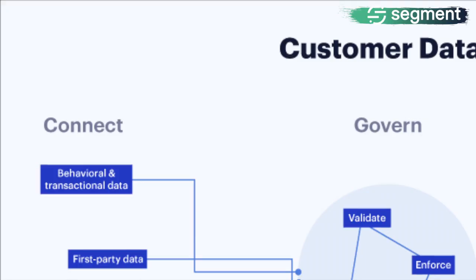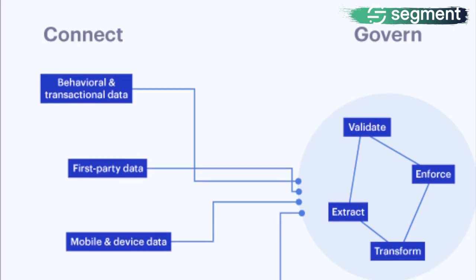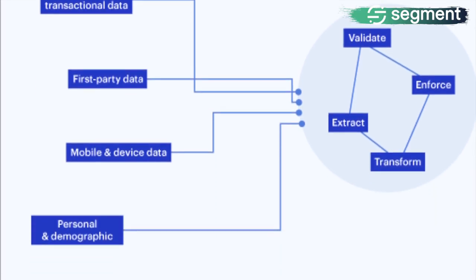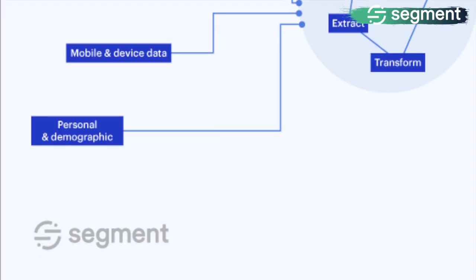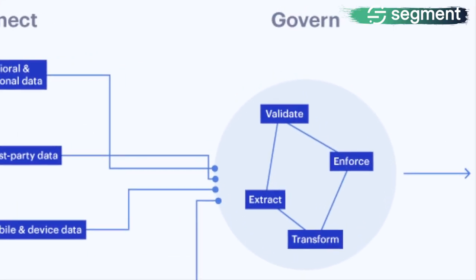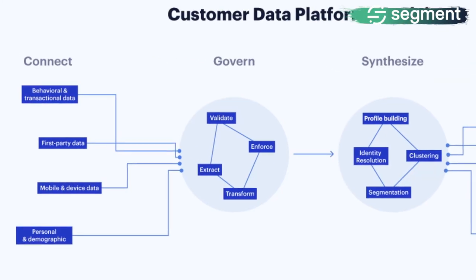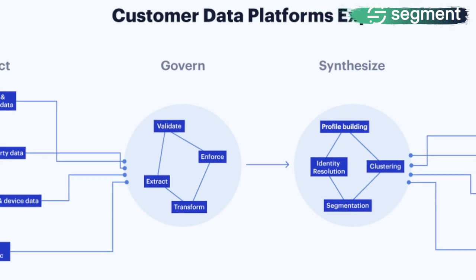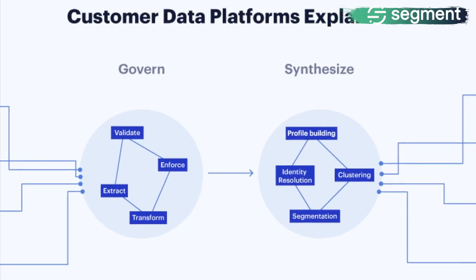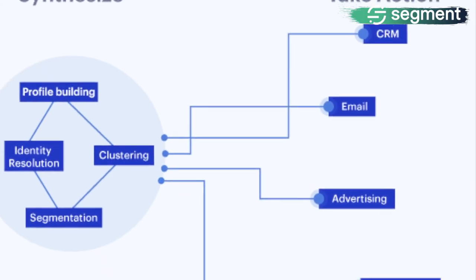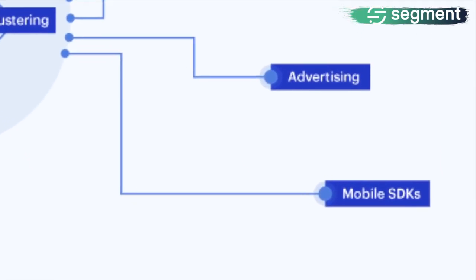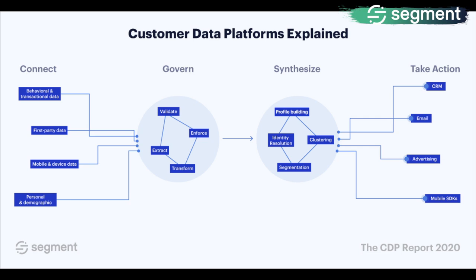Concretely, that has four parts. You want to connect your data from different sources — whether that's your website, your mobile apps, or internal tools like help desks. You need to bring that data all into one consistent place where you govern it and make sure it follows your protocols and PII rules. Then you synthesize that data, combine it into a single view of the customer, and take action on it — pushing it into your CRM for salespeople, email tools for marketing, advertising, or other tools powering different parts of your business.